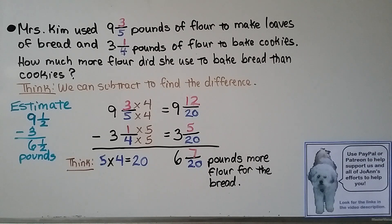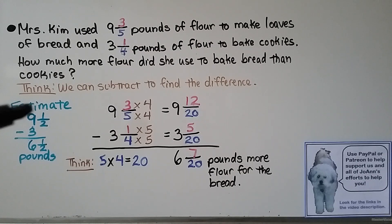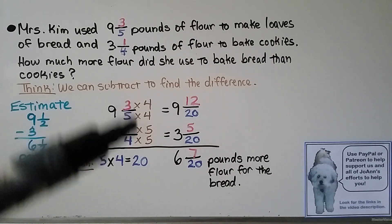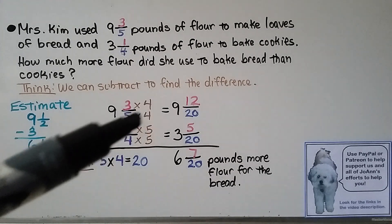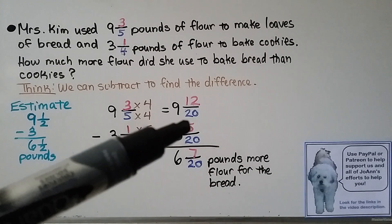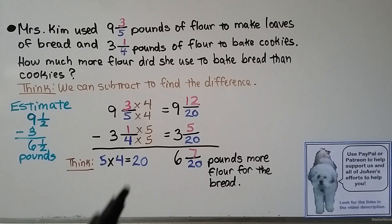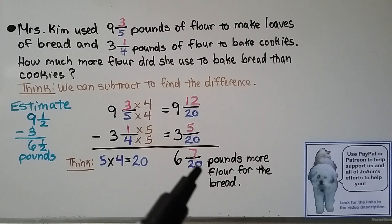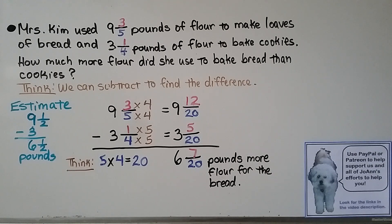Mrs. Kim used 9 and 3 fifths pounds of flour to make loaves of bread and 3 and 1 fourth pounds of flour to bake cookies. How much more flour did she use to bake bread than cookies? We subtract to find the difference. 9 and 3 fifths is close to 9 and a half, and 3 and 1 fourth is close to 3, so our estimate is 6 and a half pounds. Using common denominator 20: 5 times 4 is 20, so we multiply 3 times 4 to get 12 twentieths; 4 times 5 is 20, so we multiply 1 times 5 to get 5 twentieths. 12 minus 5 is 7, giving 7 twentieths. 9 minus 3 is 6. She used 6 and 7 twentieths pounds more flour for the bread.